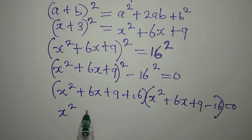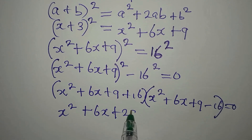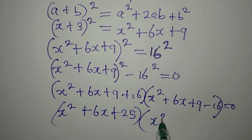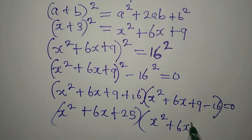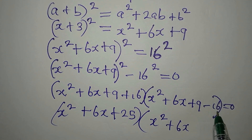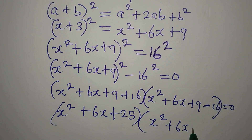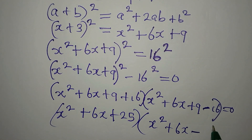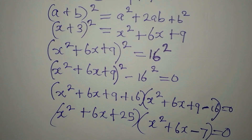So the first bracket simplifies to x² + 6x + 25. In the second bracket, do not put plus because 9 is less than 16, so the sign that reflects is negative: 9 − 16 gives −7, and we have x² + 6x − 7. We equate to zero.